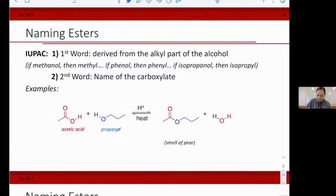So I'm going to drop the ANOL and replace it with YL. So I'm going to have propyl. And then the carboxylic acid portion, where that came from is acetic acid. So the carboxylate version of that, we drop the IC acid and we just have acetate.